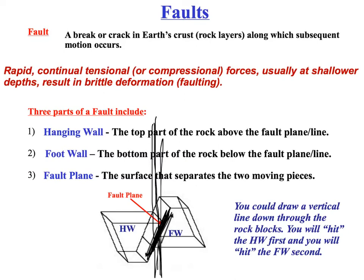In this particular case, it appears that the hanging wall has moved down and the foot wall has moved up. From that, I know that the type of fault we're dealing with in this example is a normal fault. Typically when rocks break, it's because the forces applied — whether compressional, tensional, or shear — basically happened in a very rapid, continual fashion, and that's the reason why the rocks faulted.